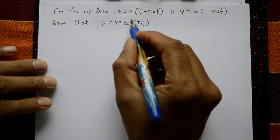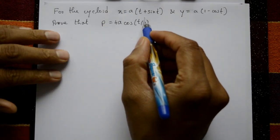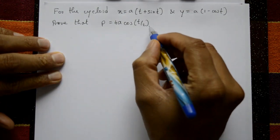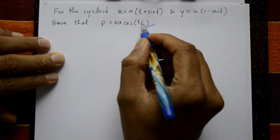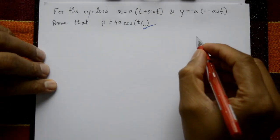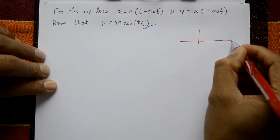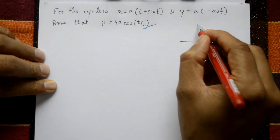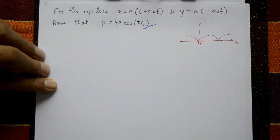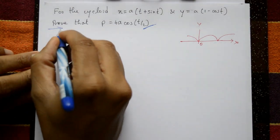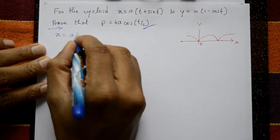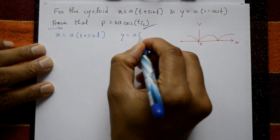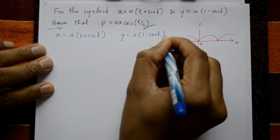For the cycloid x = a(t + sin t) and y = a(1 − cos t), prove that ρ = 4a·cos(t/2). This is a cycloid — its diagram shows a curve along the x–y axis. The solution begins with x = a(t + sin t) and y = a(1 − cos t).